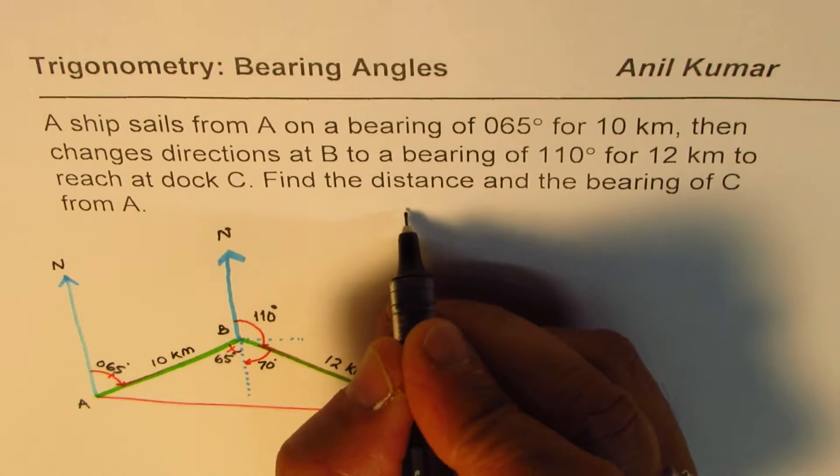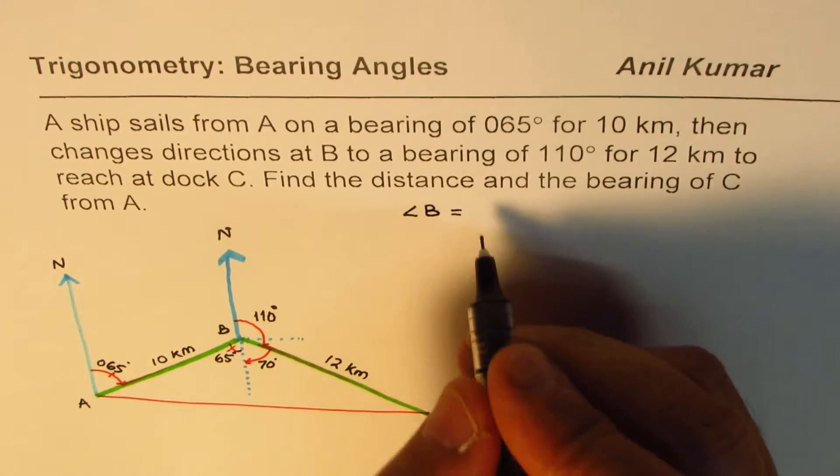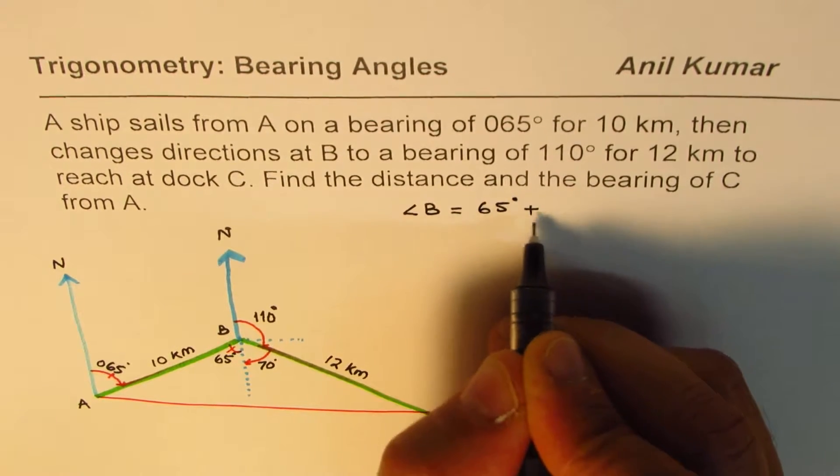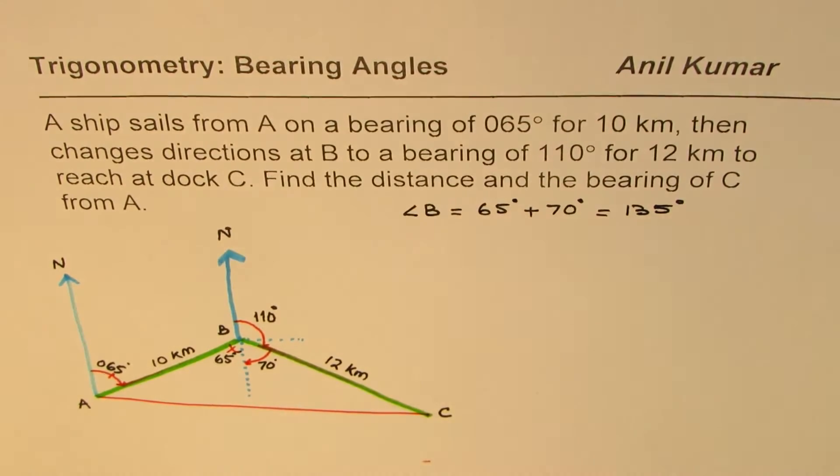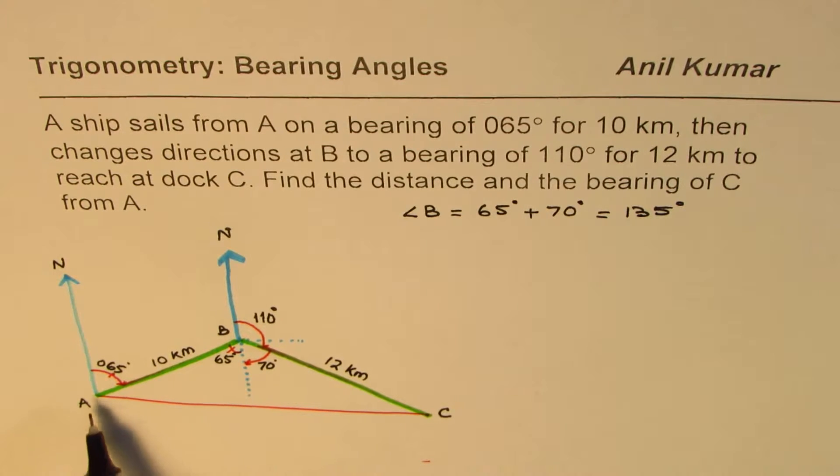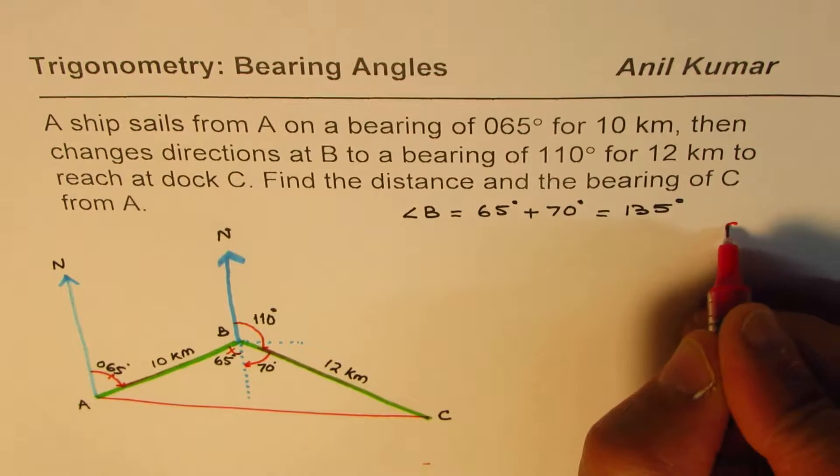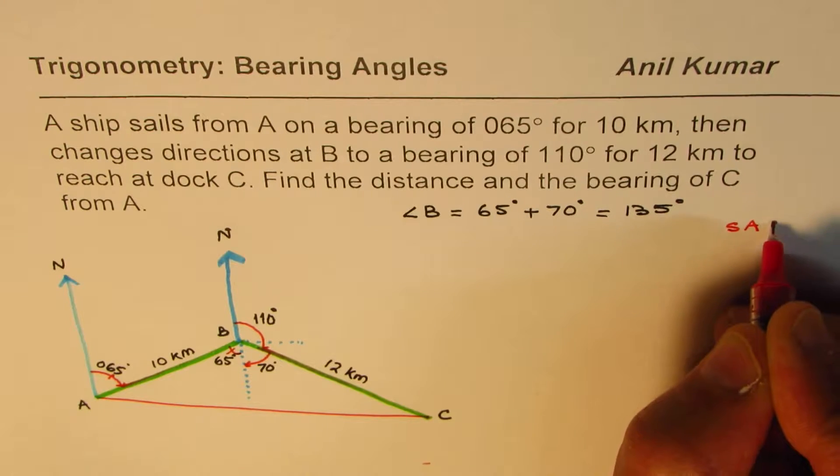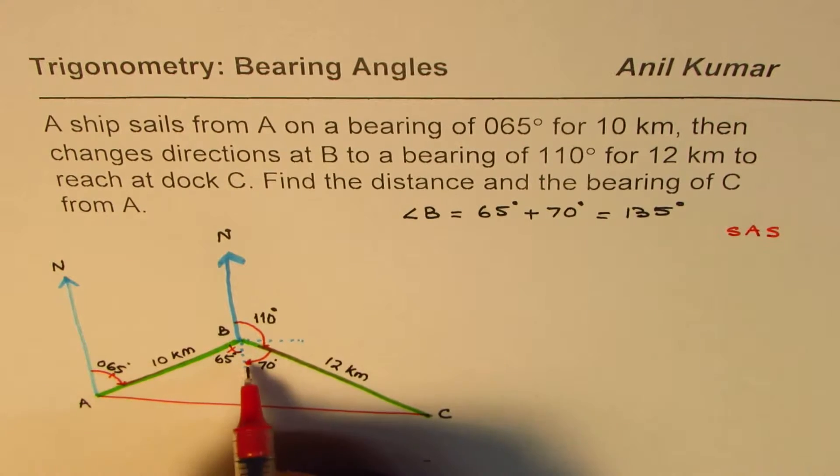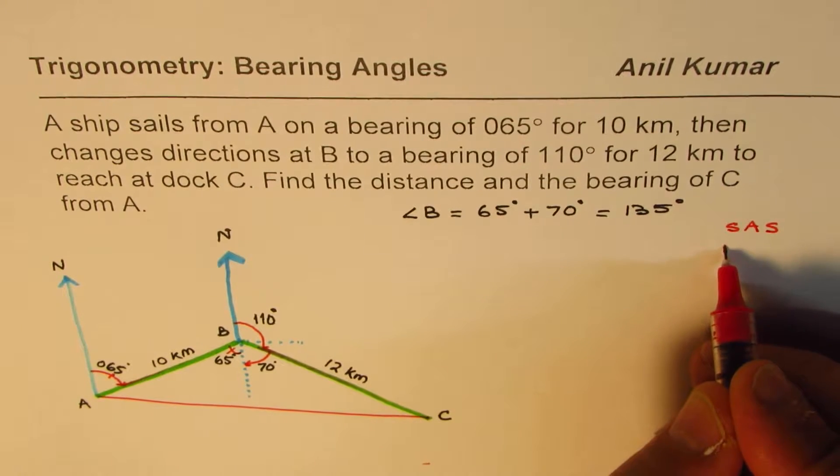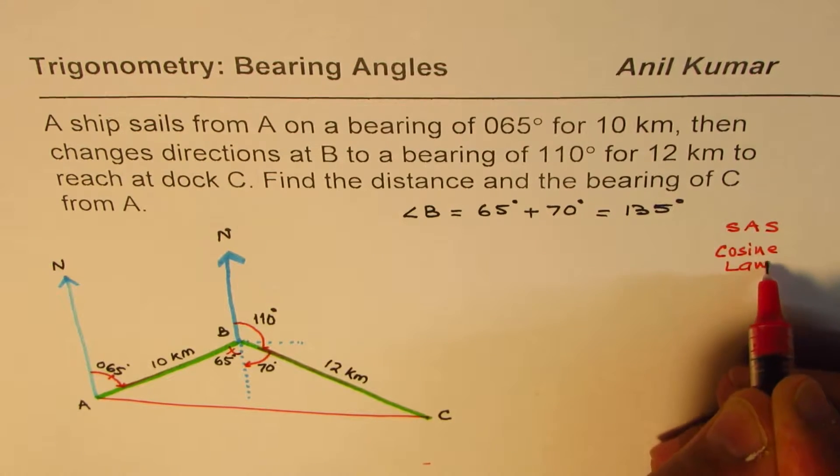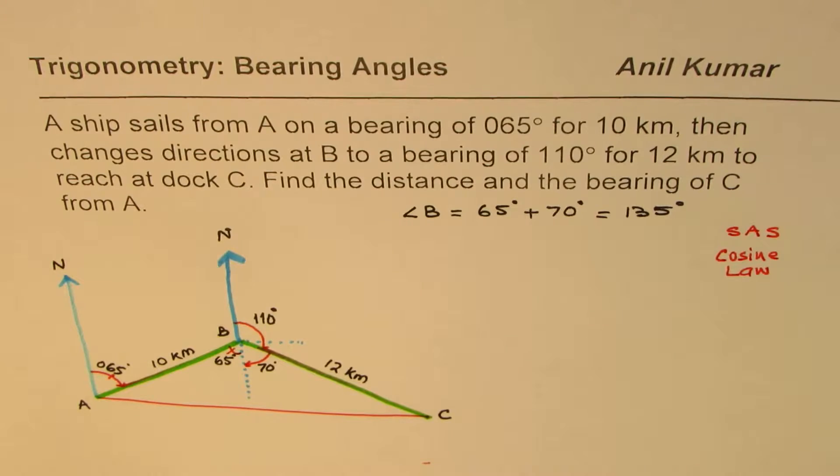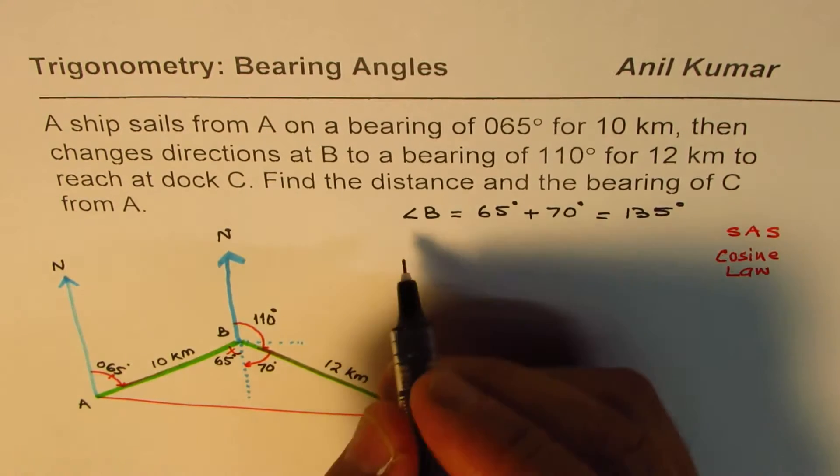So what we find here is that the angle B is equal to 65 degrees plus 70 degrees which is 135 degrees. So in the triangle ABC we know two sides and the included angle. So what is known to us here? It is known that we have side angle side. So in a triangle if you know side angle side, the included angle, then you should be applying cosine law. So we need to apply cosine law to find the third side.